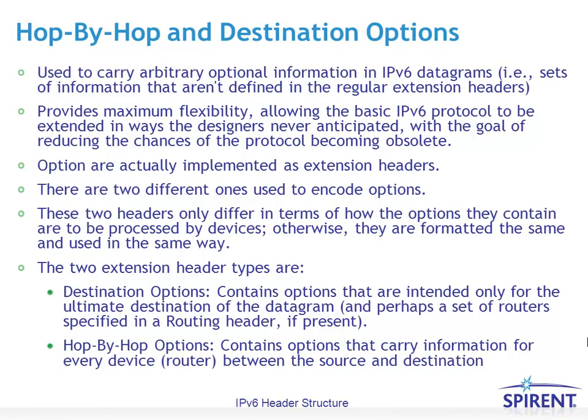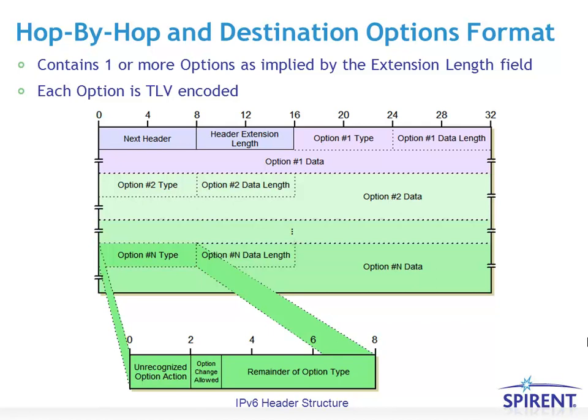Hop-by-hop and destination options carry arbitrary TLV-encoded information to provide maximum flexibility, implemented as extension headers within IPv6. Hop-by-hop options are implemented using two extension header types. Destination options are intended only for the destination of the datagram, or perhaps a set of routers in between if specified in the routing header. Hop-by-hop options carry information for every device — every router — between source and destination. You can have one or more actual options inside each extension header, encoded as a type, a length, and a value — TLV encoded.